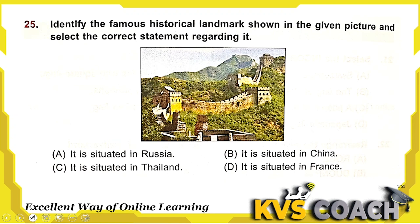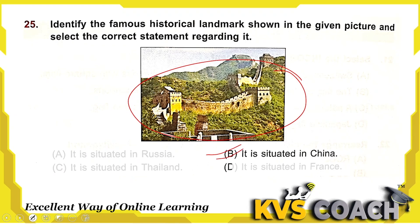Next: identify the famous historical landmark shown in the picture. This is the Great Wall of China, situated in China. Option B is the right answer. It is almost 5,000 kilometers long.